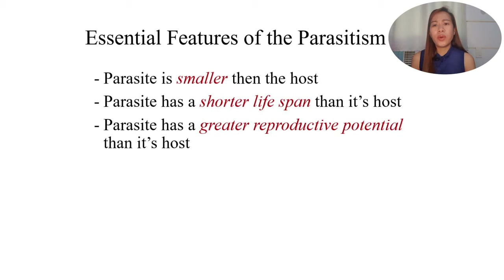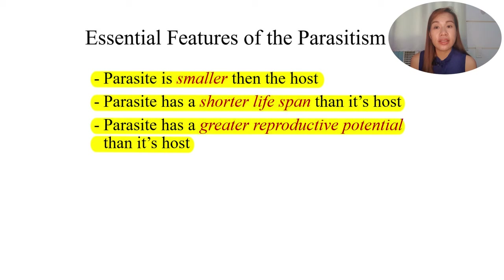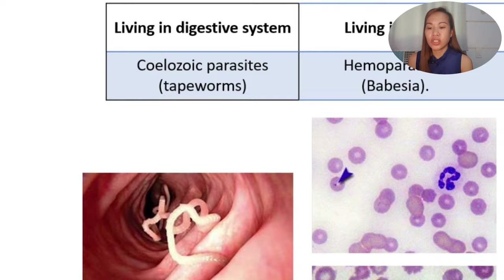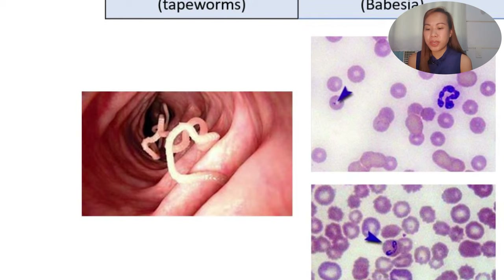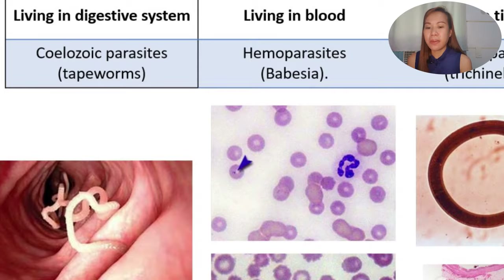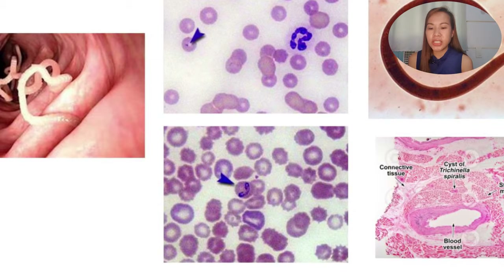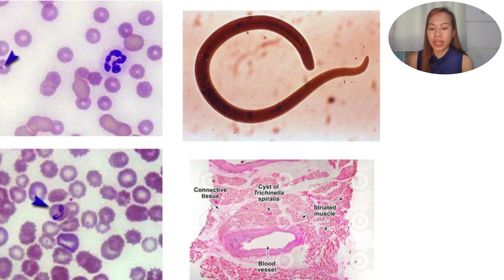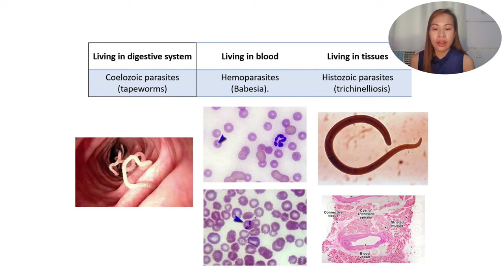The essential features of parasitism: parasites are smaller, have a shorter lifespan, and have greater reproductive potential than their host. Parasites can live in different places — some live in the digestive system, such as cestodes or tapeworms. Some live in the blood, called hemoparasites, like Babesia. And some live in tissues — called histozoic parasites — such as Trichinella.